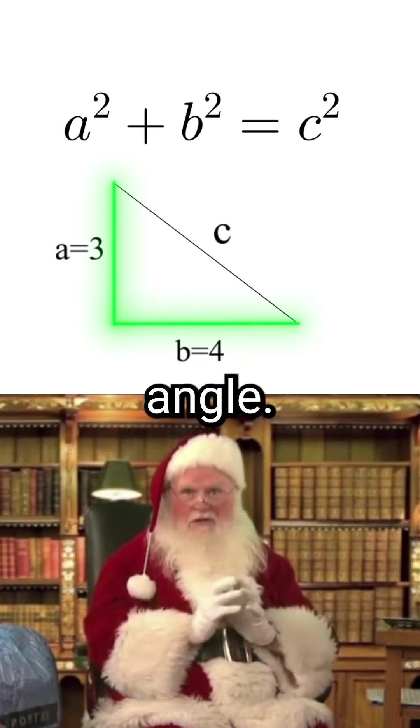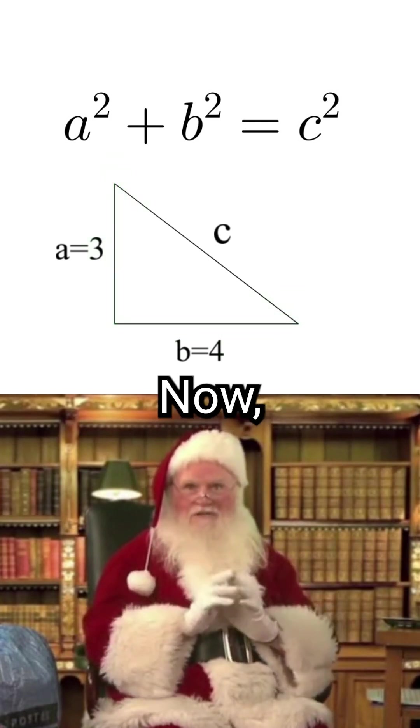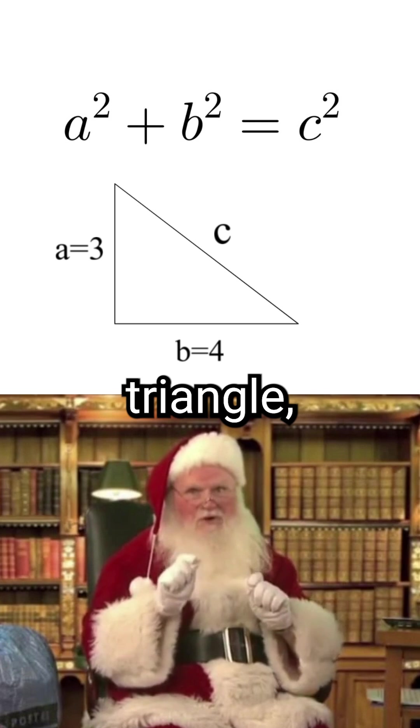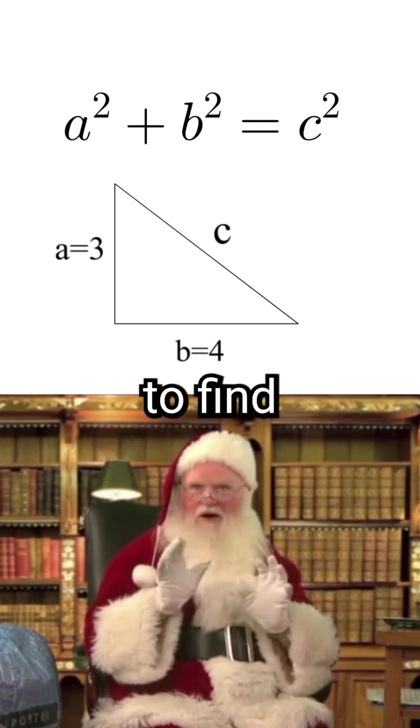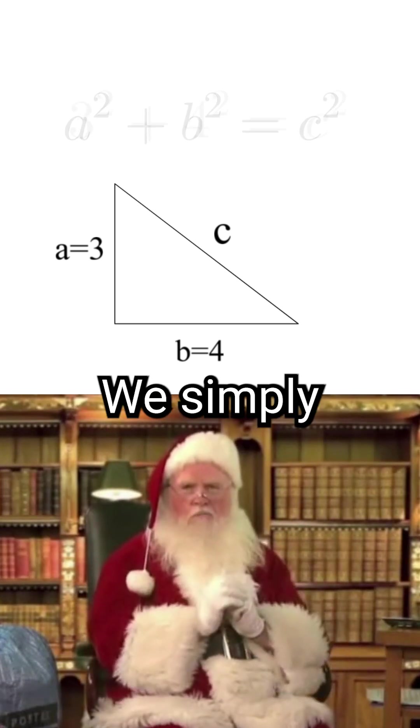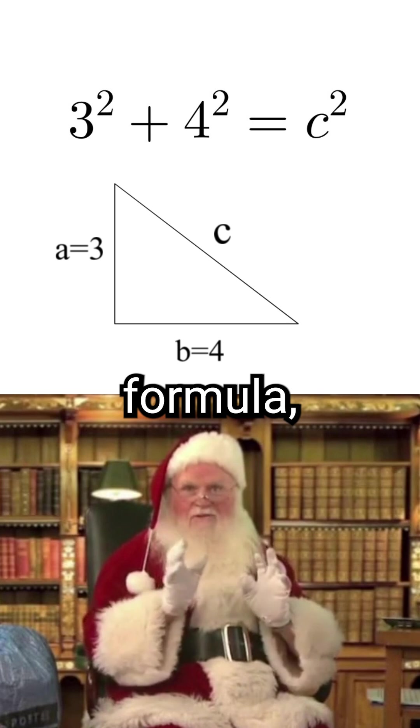Now since we know two sides of the triangle, we can use the Pythagorean theorem to find the third side. We simply plug in the sides we know into the formula, square the numbers, and then add them up.